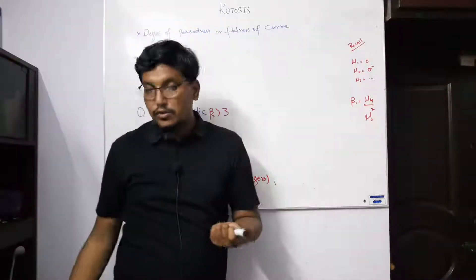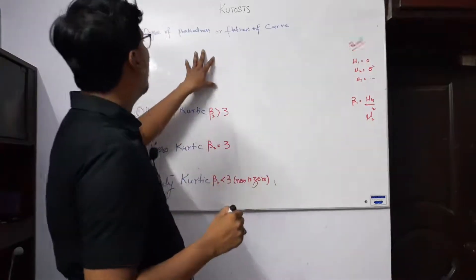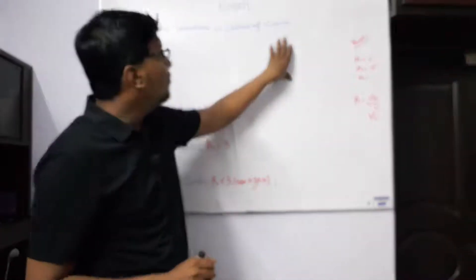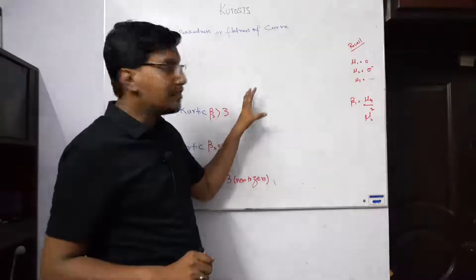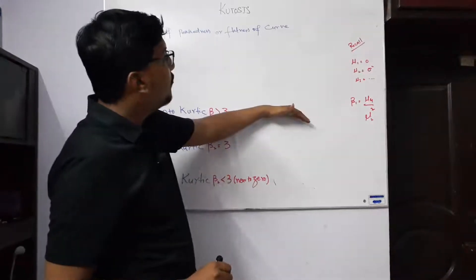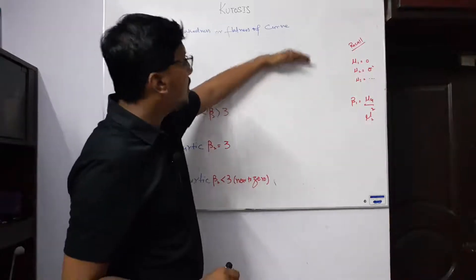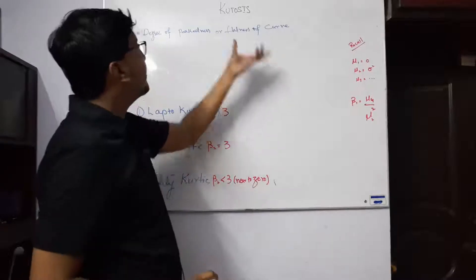So what is kurtosis? Kurtosis is basically the idea which tells about the peakedness and flatness of the curve. We were discussing distribution shape; now we are interested in the peakedness of data, what is the peak or the flat. The degree of flatness is called kurtosis.